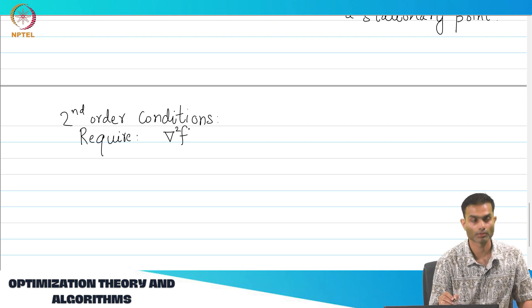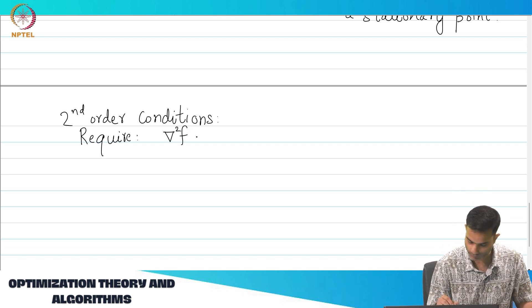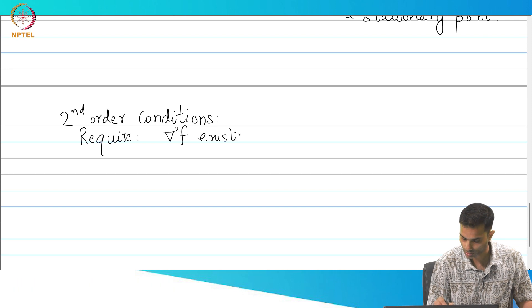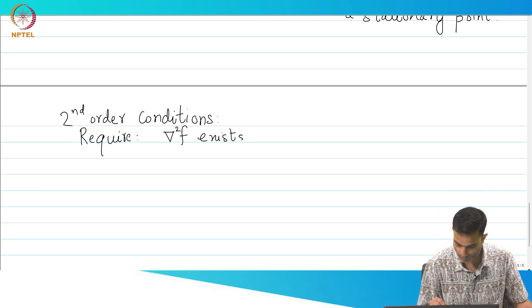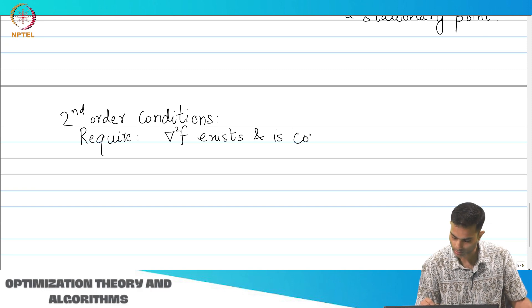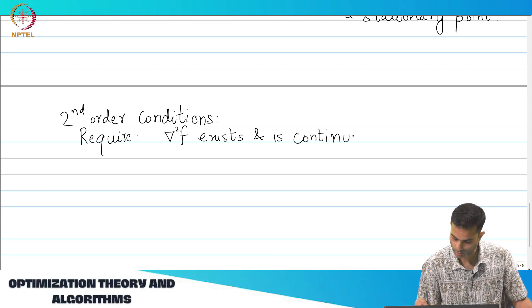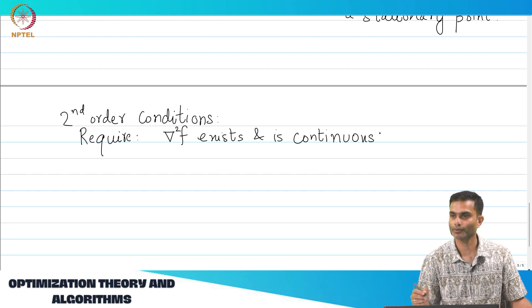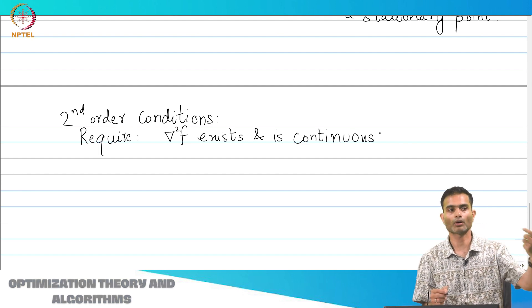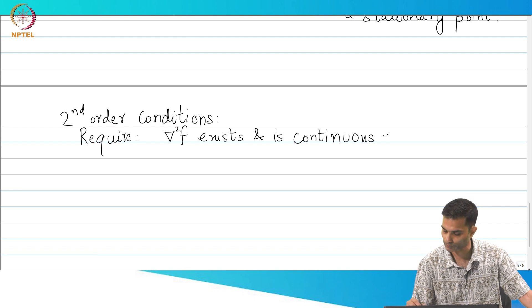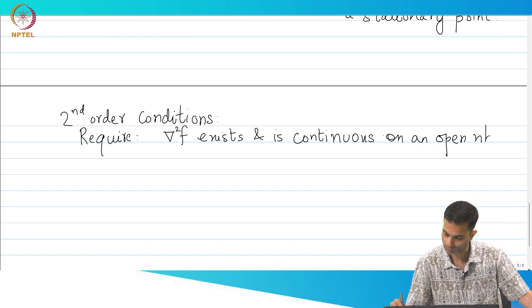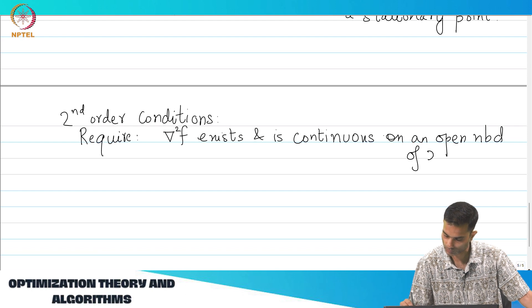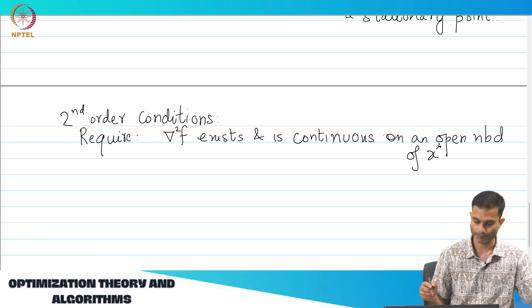Obviously, the Hessian should exist. Not only should it exist, it should be continuous. Exists and is continuous and again we will use the formal phrasing on an open neighborhood.